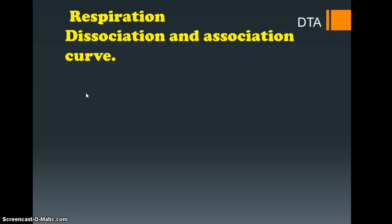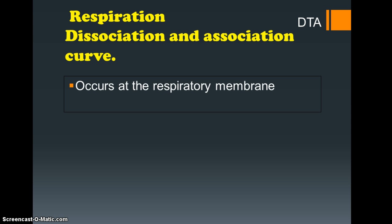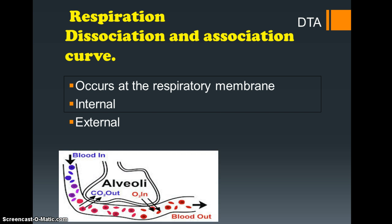Welcome to another DTA screencast. In this session we're looking at respiration, principally dissociation and association curves. First and foremost, recall that the process of respiration occurs at the respiratory membrane. We have internal and external respiration — external respiration from the alveoli to the capillaries, and internal respiration which takes place at the working muscles and the capillaries.